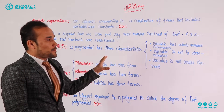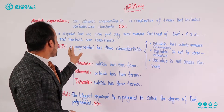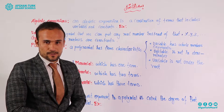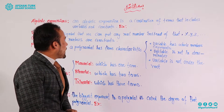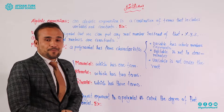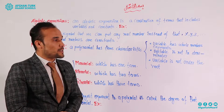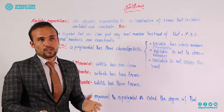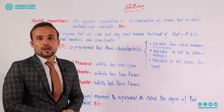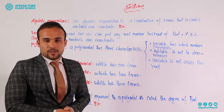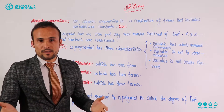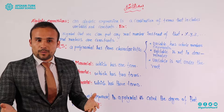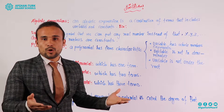As I wrote on the board, an algebraic expression is a combination of variables and constants. So let's look at the meaning of variables and constants. A variable is itself a symbol that we can put any real number in place of. For example, X, Y, Z — instead of X, Y, Z, we put any number that we want.